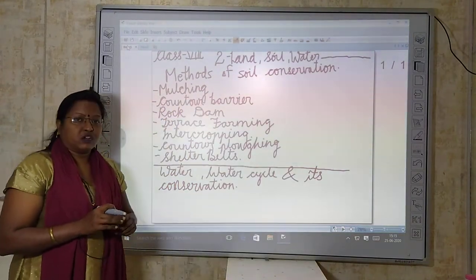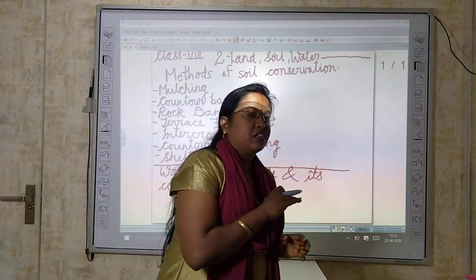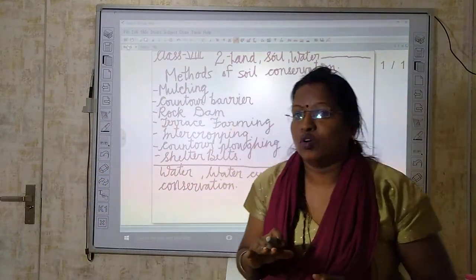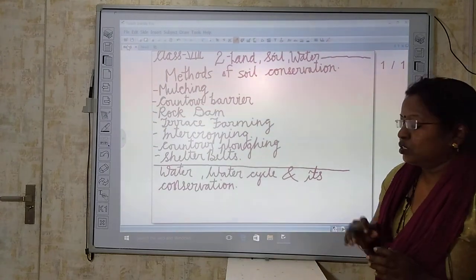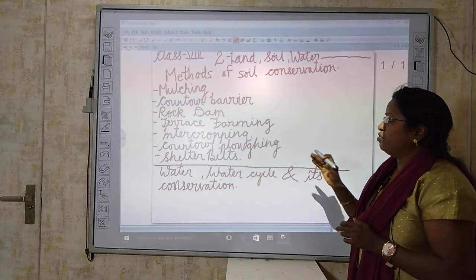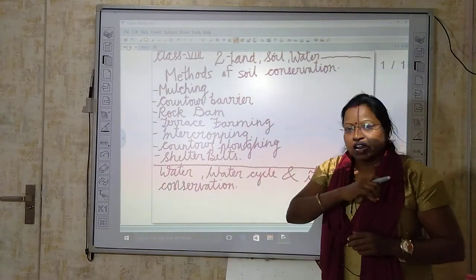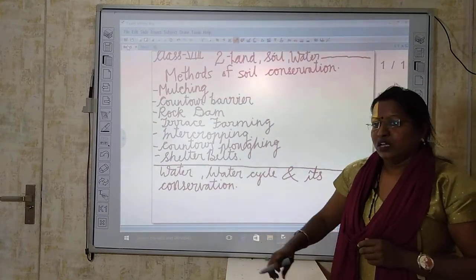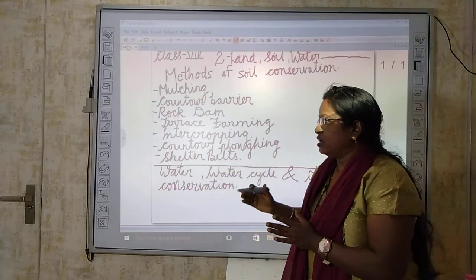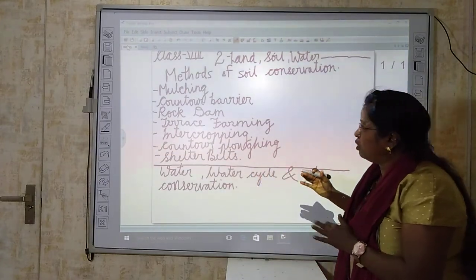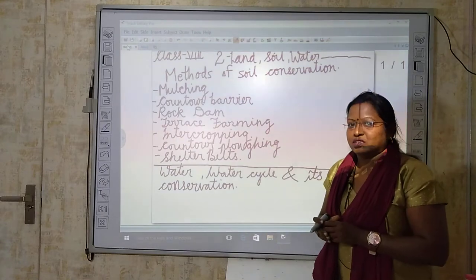The second method is contour barrier. Contour barrier means wherever there is a possibility that water will flow away and flush away the top layer of the soil, we grow some grass over there so that the flow of water is slowed and water gets collected at a particular place. This method is known as contour barriers.